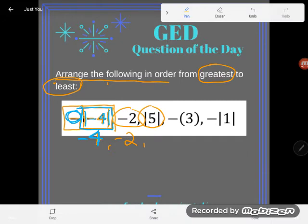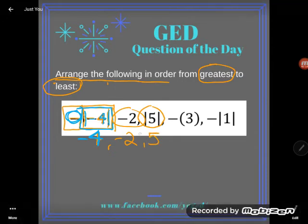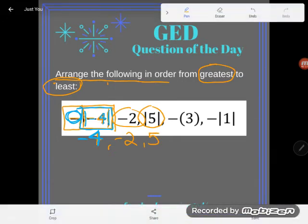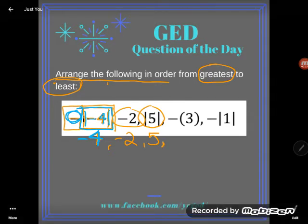Next one. Absolute value of five. Again, all that absolute value bars do is make their inside positive. Five is already a positive number. So this is just five. Five is five units away from zero on the number line. That's what absolute value means. Distance from zero.